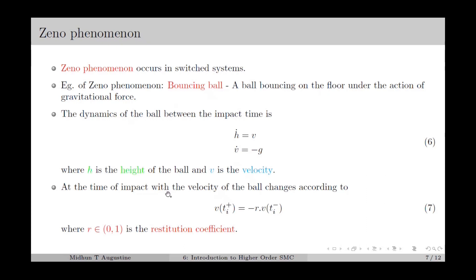At the time of impact, the velocity of the ball changes as per equation number 7, where v is the velocity of the ball after it hits the ground and v is the velocity of the ball before it hits the ground. R is called the restitution coefficient, which takes a value between 0 and 1. After hitting the ground, the velocity of the ball changes direction, which is why the minus sign appears. By combining these two equations, we obtain the dynamics of a bouncing ball.